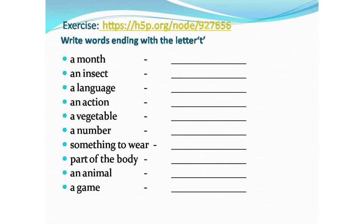Here is an exercise: write words ending with the letter T. For example, a month ending with T — August (A-U-G-U-S-T). An insect name — ant (A-N-T). A language — Sanskrit. An action — sit.